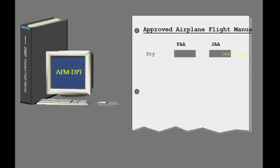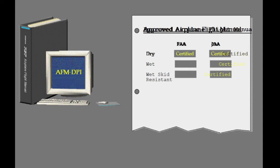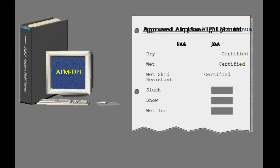The FAA or JAA approved airplane flight manuals contain dry runway performance. The FAA and JAA approved airplane flight manuals may also contain field length limited takeoff weights which take into account a wet runway and a wet skid resistant runway. The JAA approved airplane flight manual also includes advisory data which accounts for a runway covered with slush, snow, and wet ice.